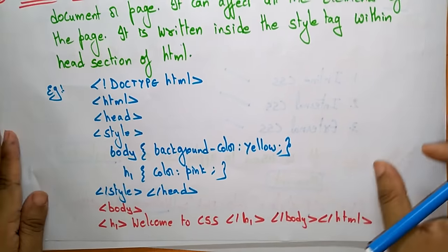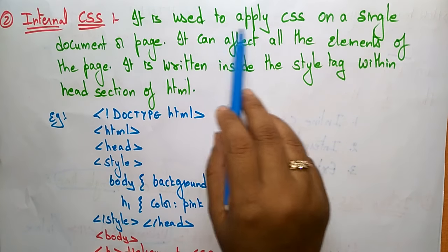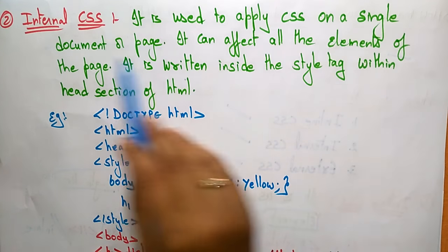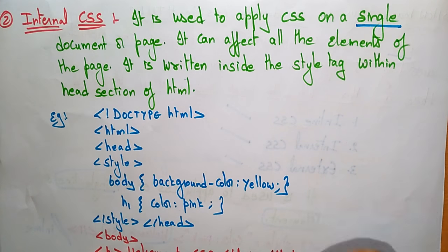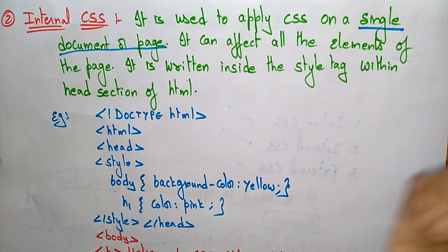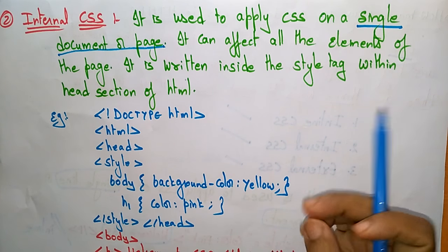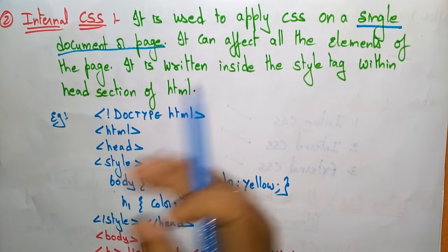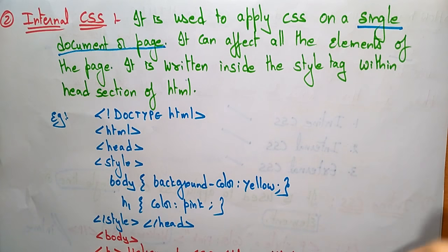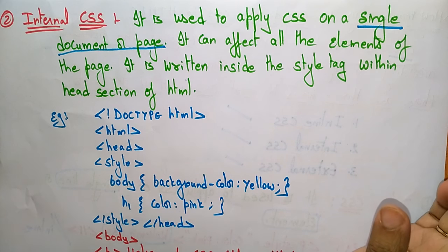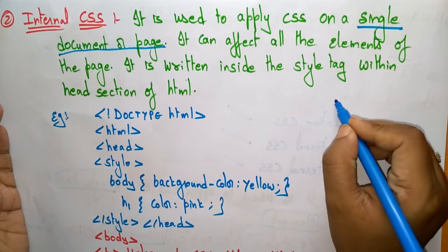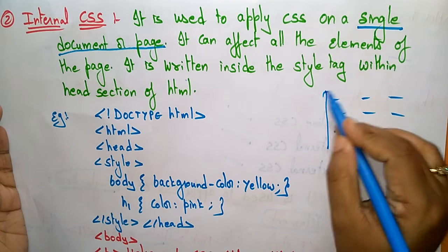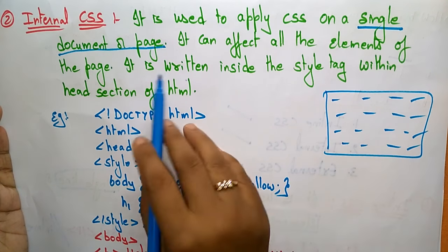The next one is the internal cascading style sheet. Internal cascading style sheet is used to apply CSS on a single document or a page. Inline means a single statement or element, but internal means a complete page or complete document can be represented by applying styles. It can affect all the elements of the page, and it is written inside the style tag within the head section of HTML.